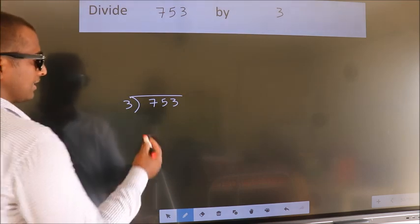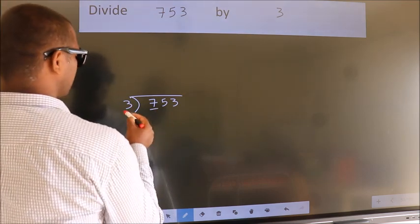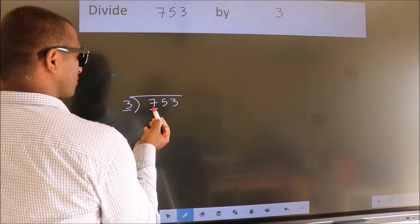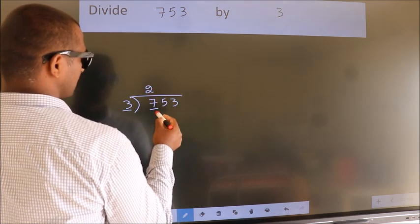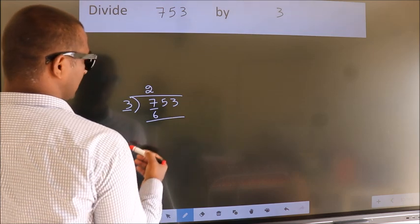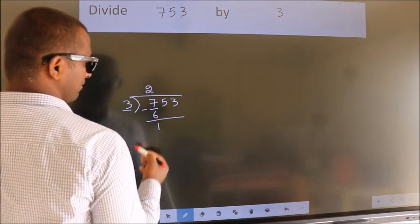Next, here we have 7, here 3. A number close to 7 in the 3 table is 3 times 2, which equals 6. Now we should subtract. We get 1.